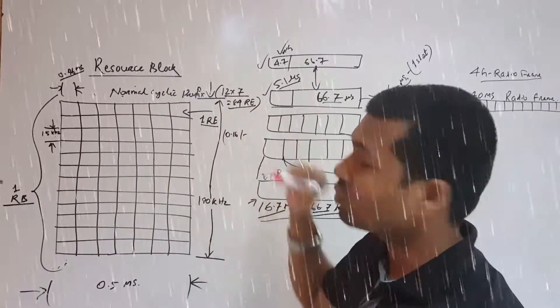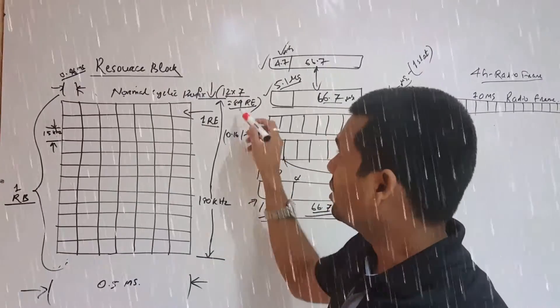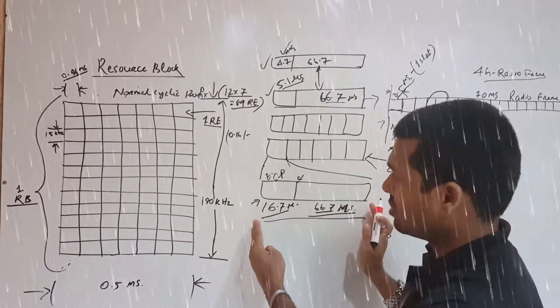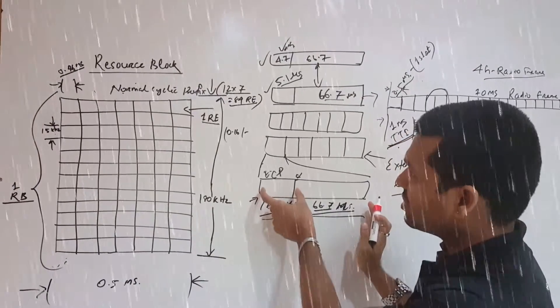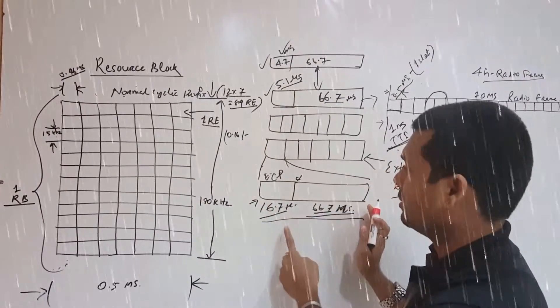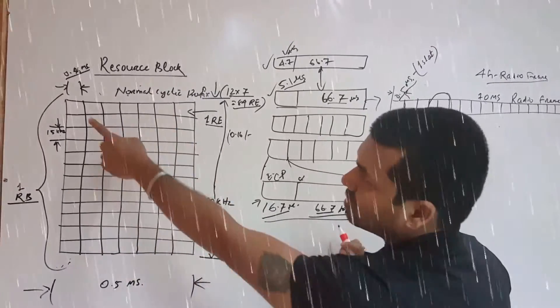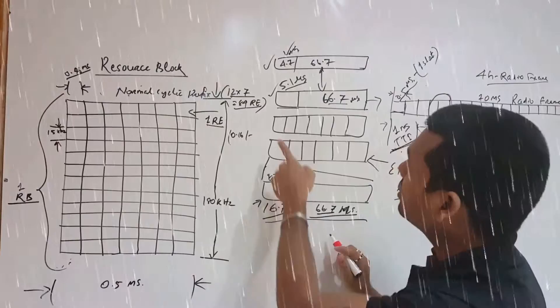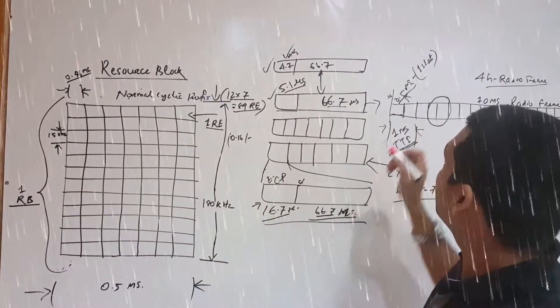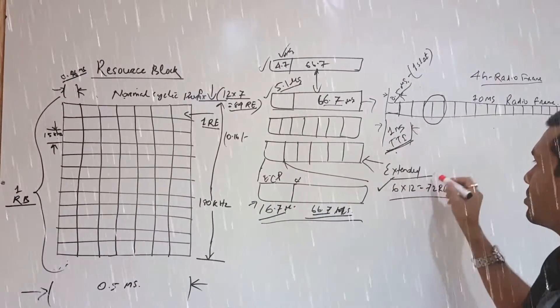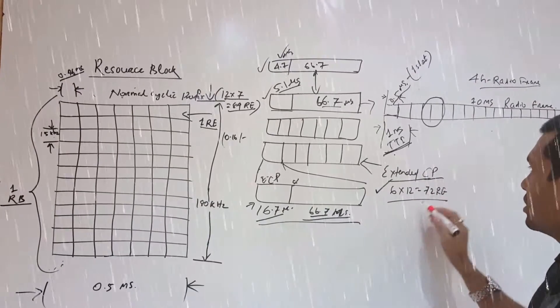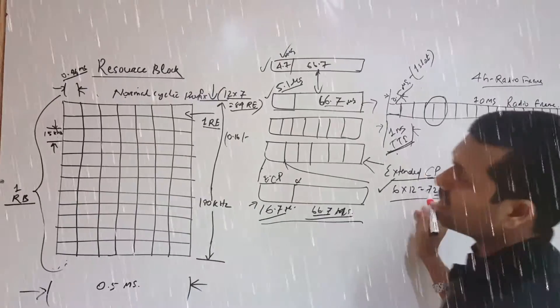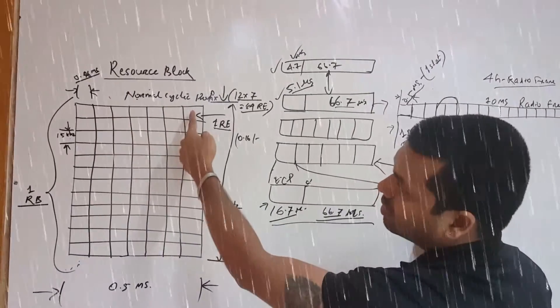And if extended cyclic prefix is used, wherein our cyclic prefix is longer than the normal cyclic prefix, then this will not be 7, this will be 6. So 6 × 12, that means 6 symbols into 12 subcarriers, that is 72 resource elements.